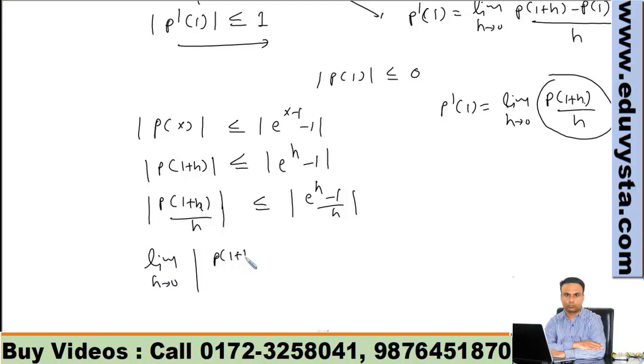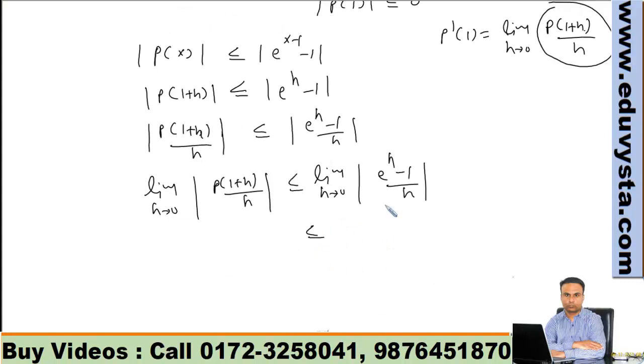|p(1+h)/h| less than or equal to limit h tends to 0, (e^h - 1)/h. Now this limit is what? This is standard limit formula. And when limit gets inside modulus, this is |p'(1)|. We proved it.